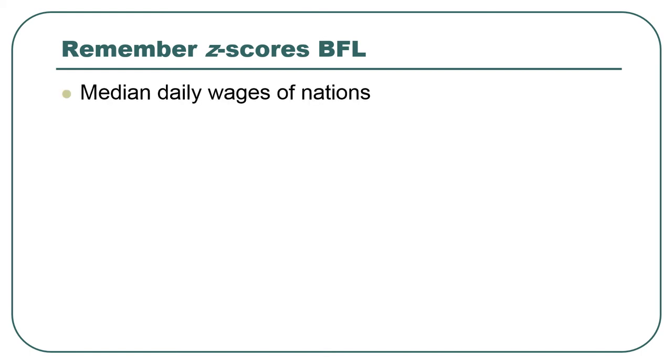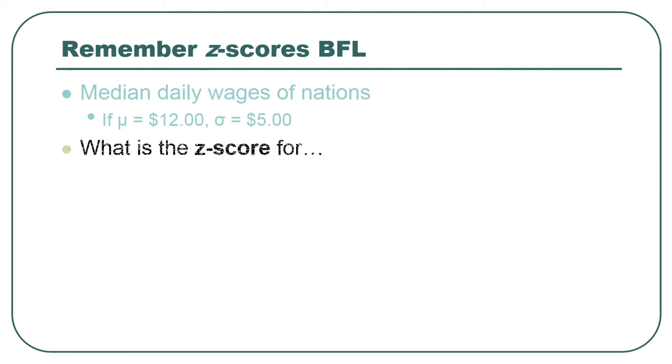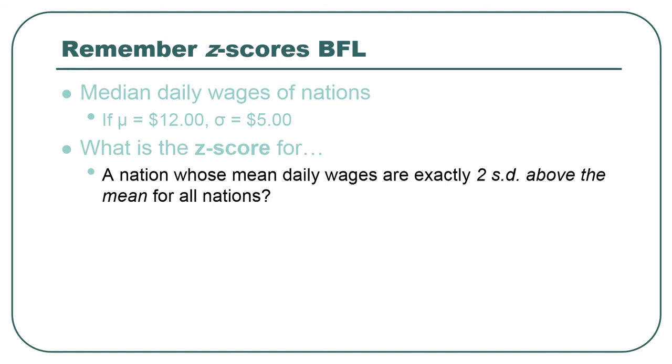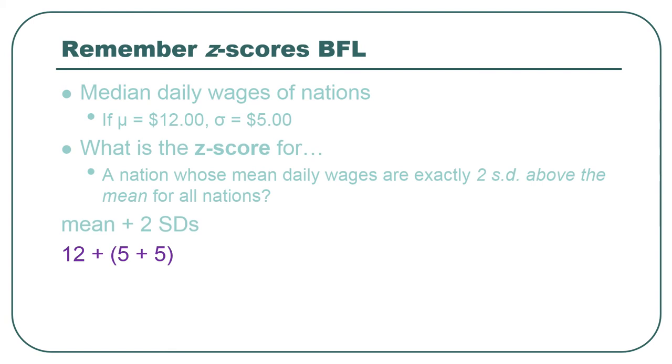So quick reminder of z-scores. If you can remember from the last lectures how to work this stuff out, let's say you know that the median daily wages of all nations around the world, each nation has one median daily wage, is a distribution with a mean of 12 and a standard deviation of 5. So what's the z-score for a nation whose median daily wages are exactly two standard deviations above the mean of that distribution? You just take the mean plus two standard deviations. So a z-score, two standard deviations above, mean plus two standard deviations. The z-score is going to be 2.0 and the raw score is going to be $22 a day. The z-score is going to be 2.0, positive 2.0.